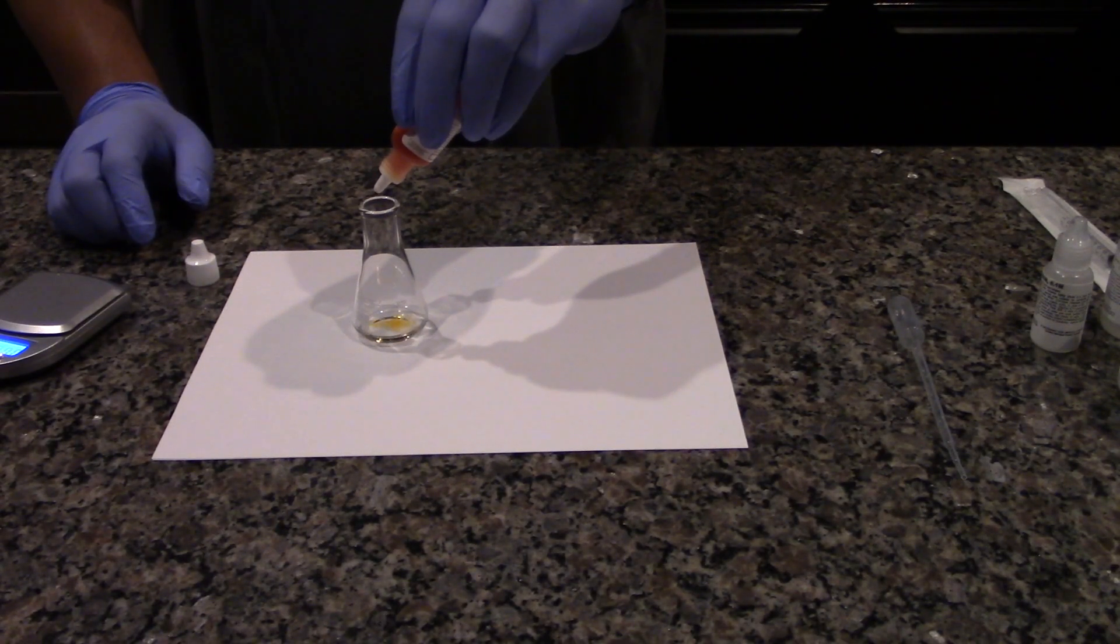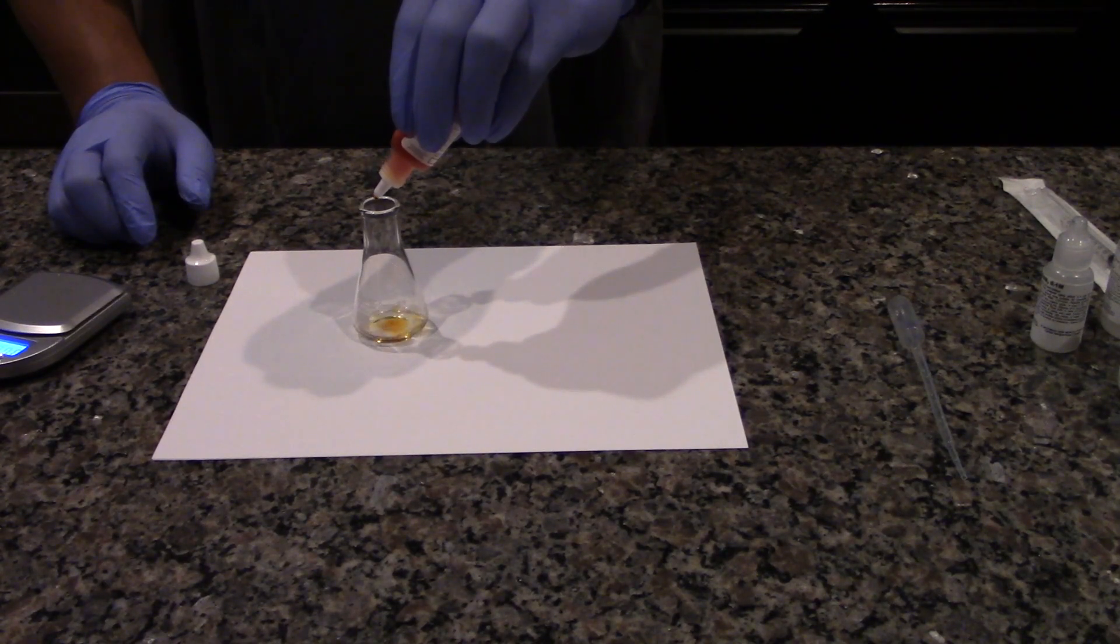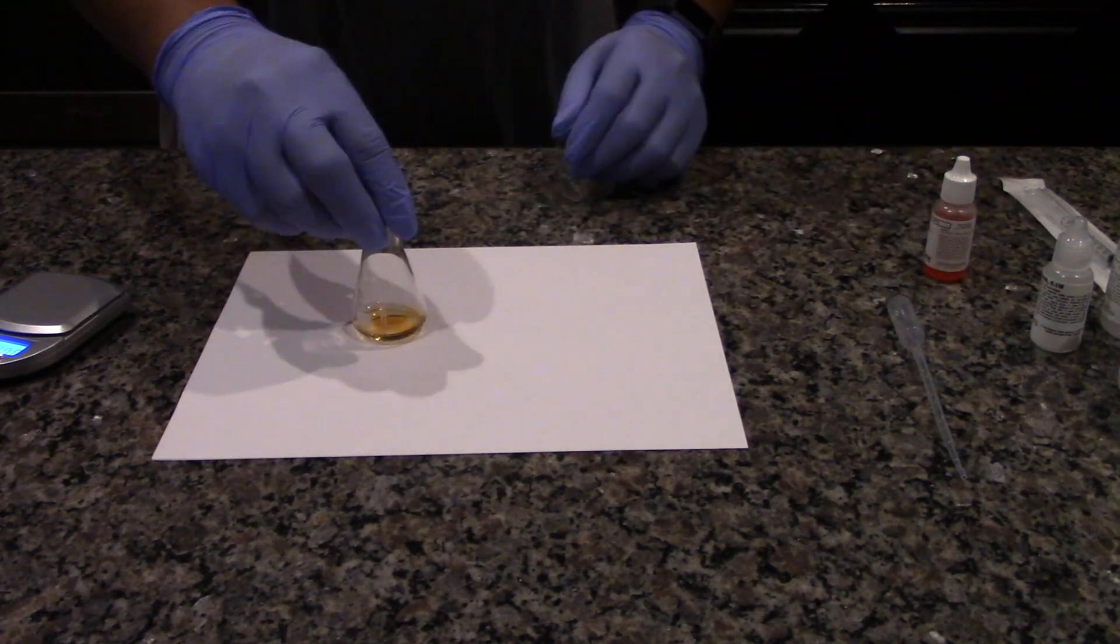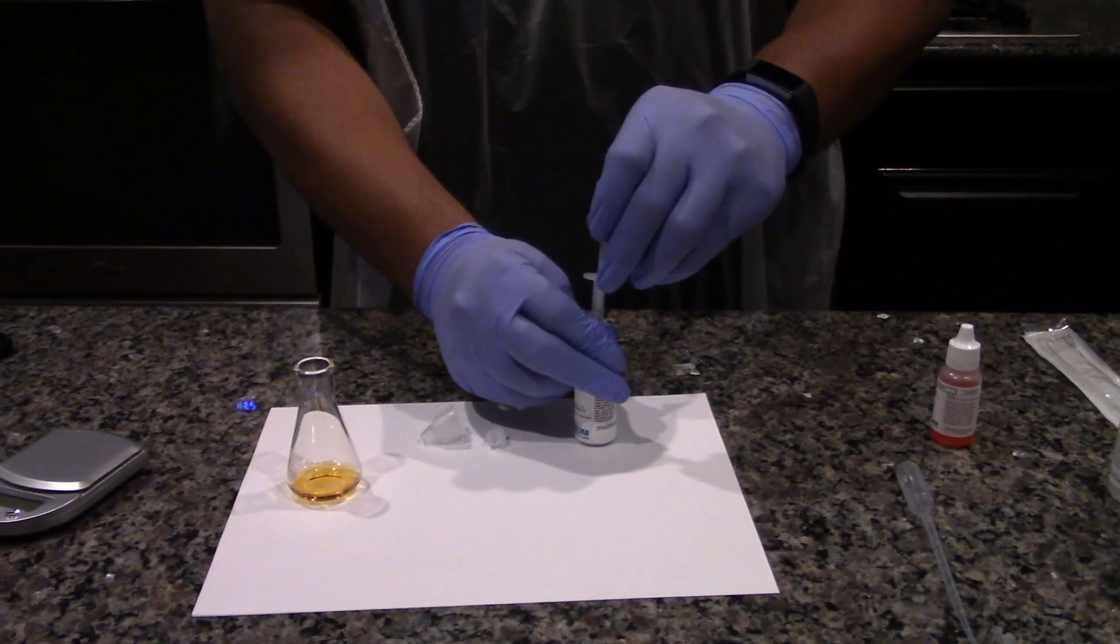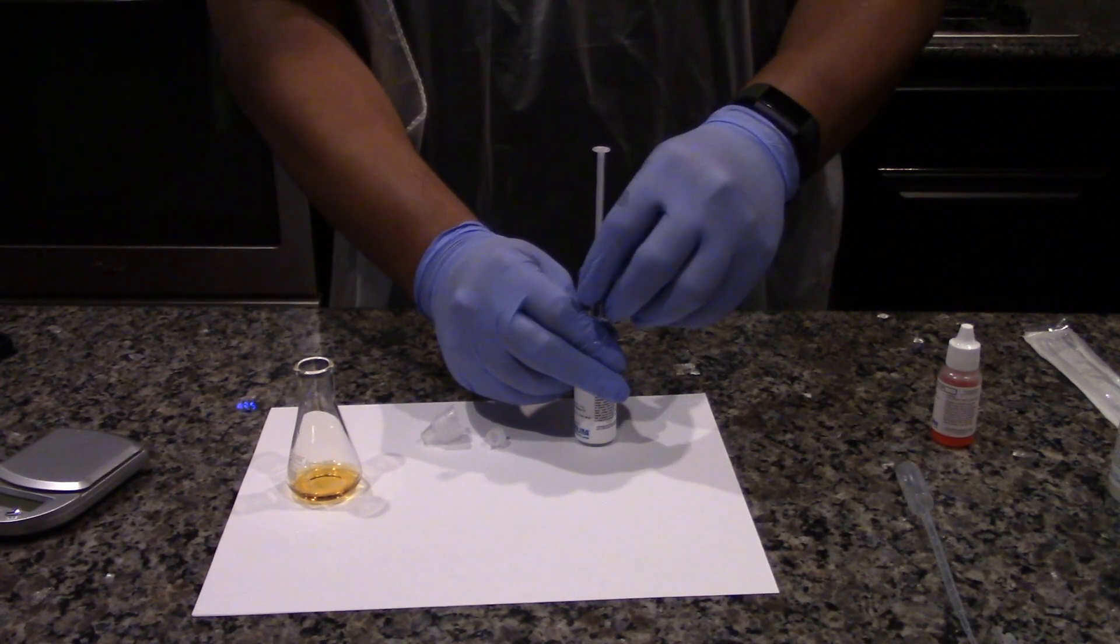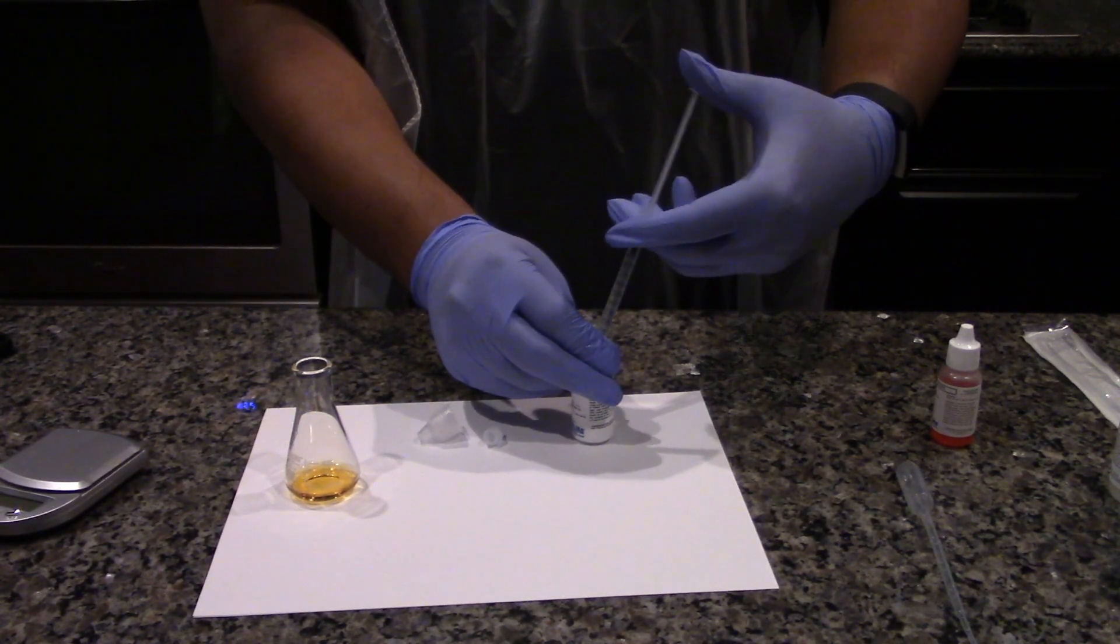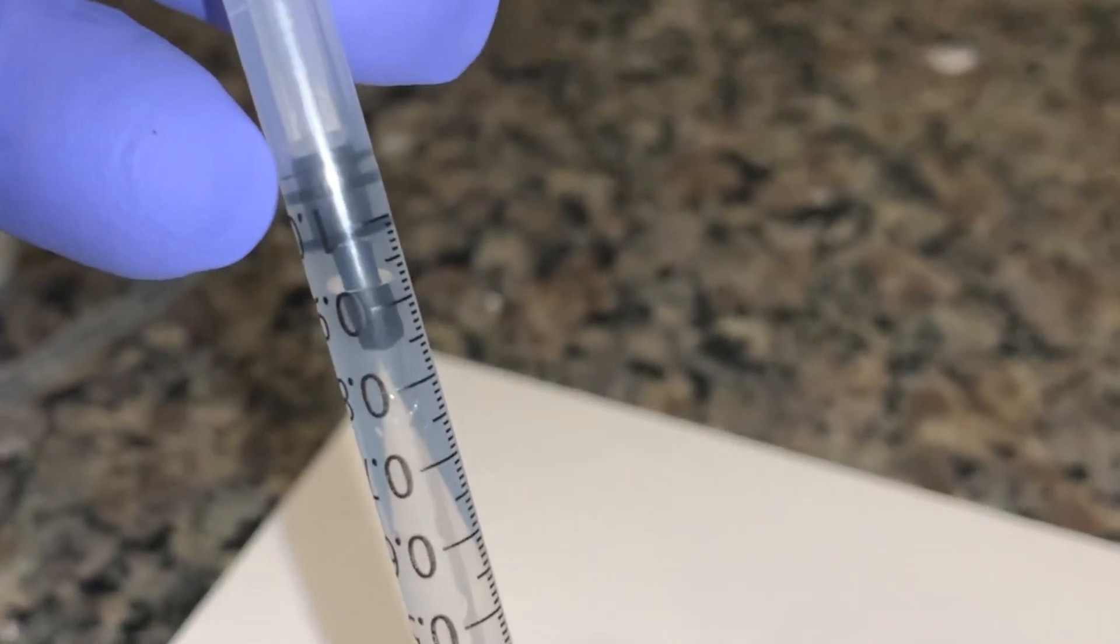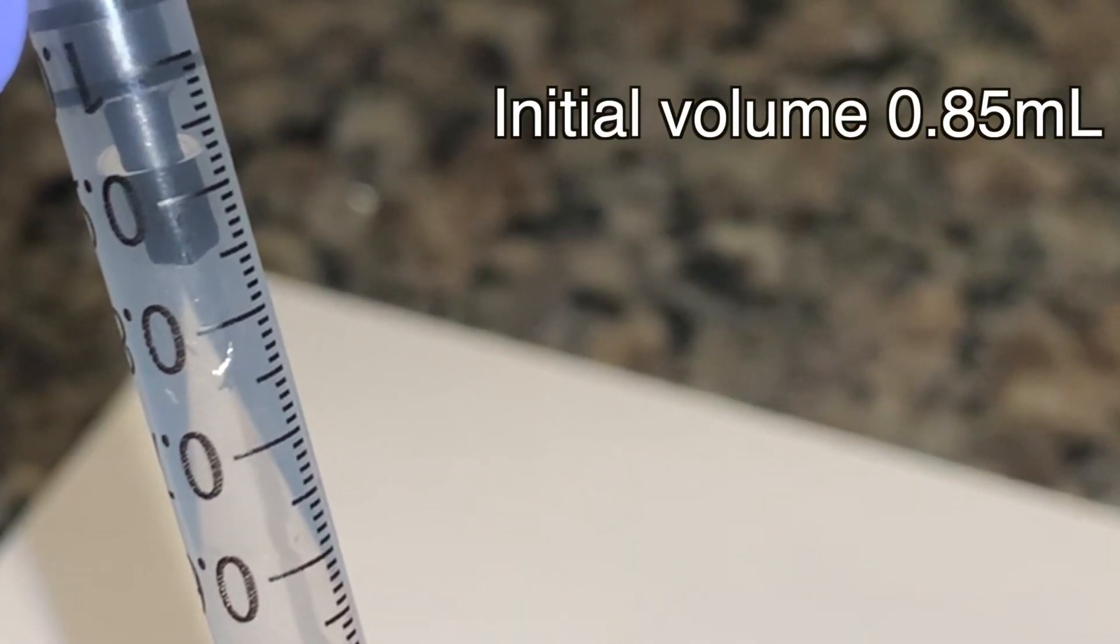Add 5 drops of methyl orange to the solution. Fill the syringe with hydrochloric acid again trying to minimize the amount of air in the syringe. Record the initial volume of hydrochloric acid solution in the data table.